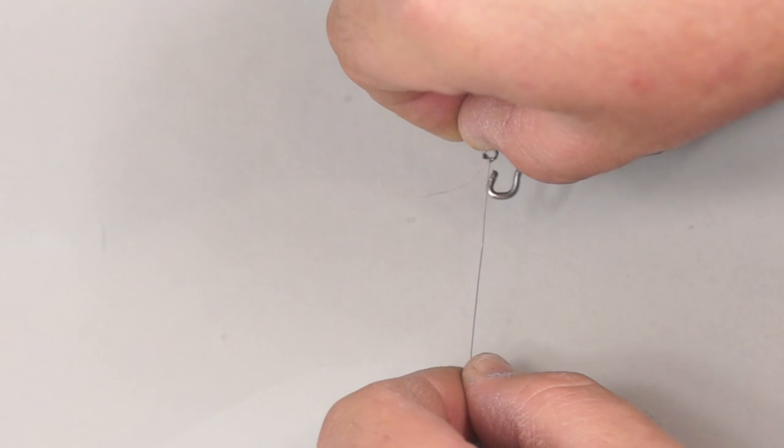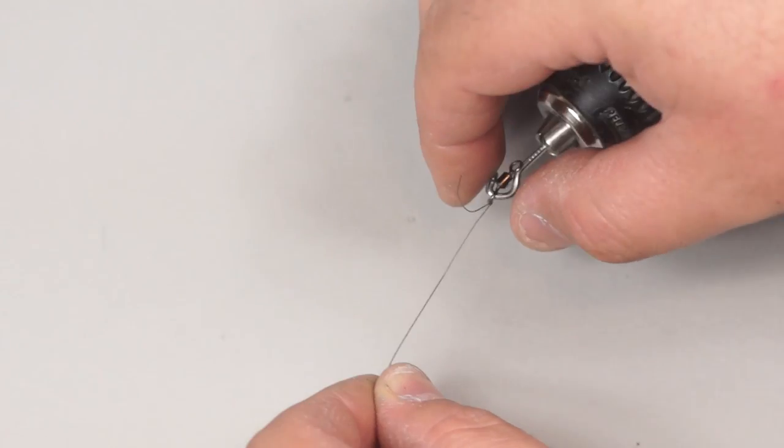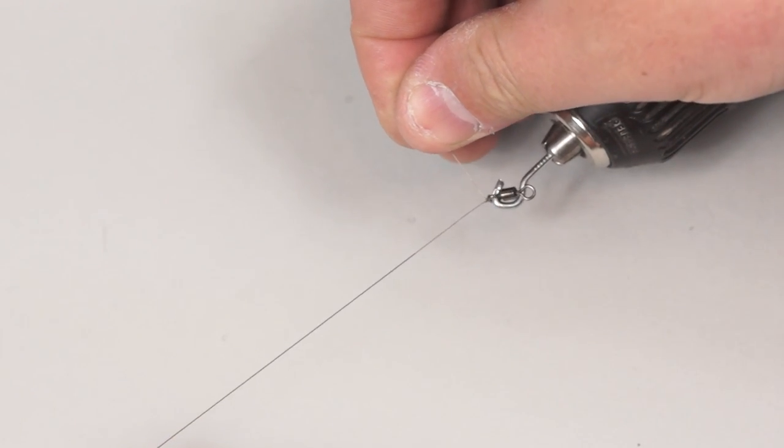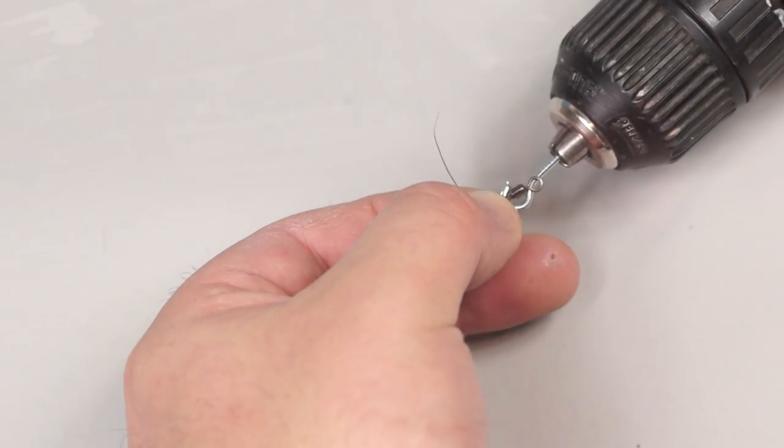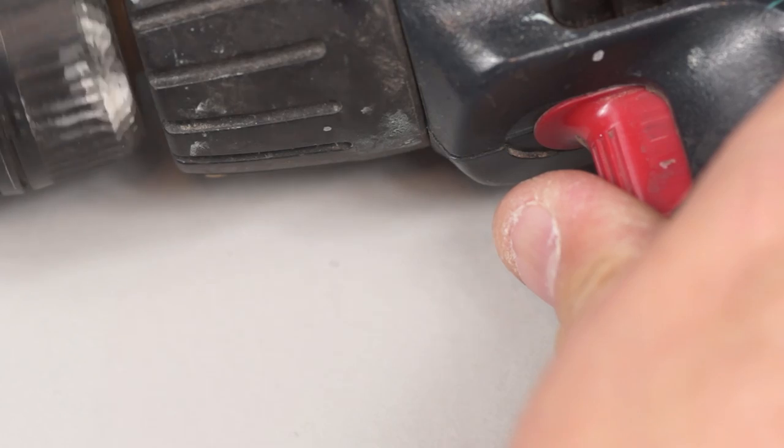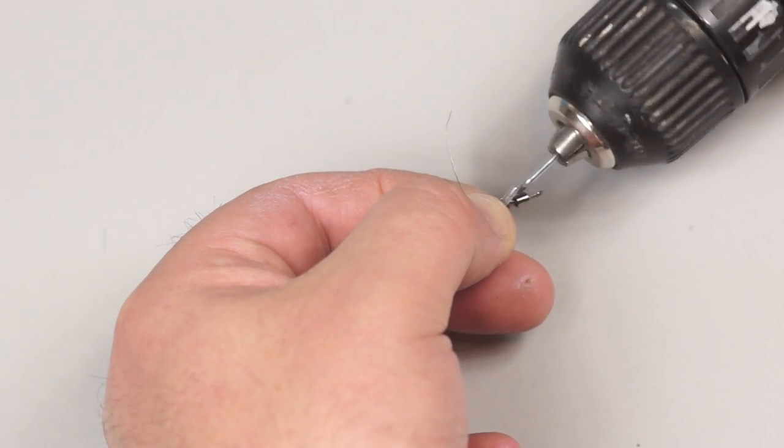To tidy up the tag end I'm going to twist it up by placing the eye on the hook in the cordless drill. Once I've pulled the tag out to the side and pinched it into position lightly, I can crank up the motor and let it do the work for me.